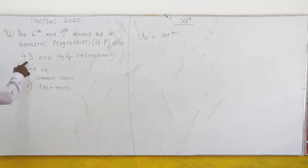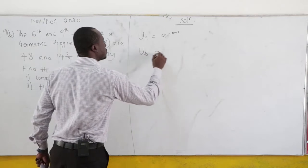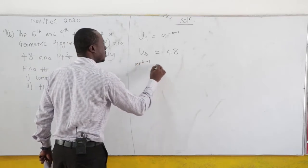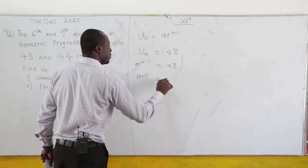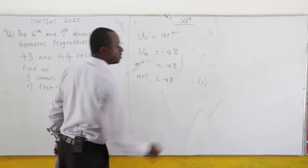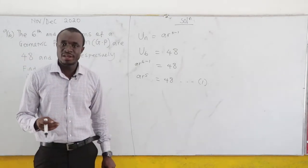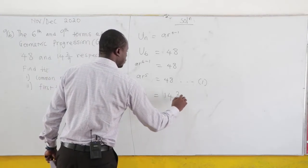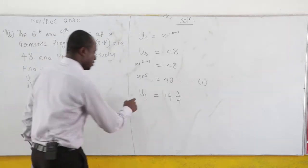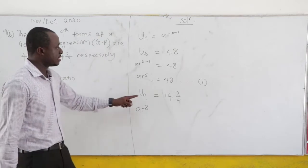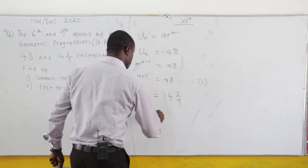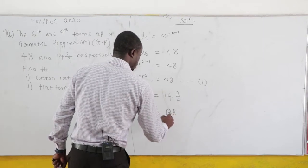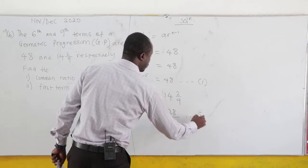We have been given that the sixth term is 48. So U6 equals AR to the power of 5 equals 48. This is equation 1. We have been given that the ninth term is 142 over 9. So U9 equals AR to the power of 8. Now, 9 times 14 is 126, plus 2 gives 128, so AR to the power of 8 equals 128 over 9. This is equation 2.